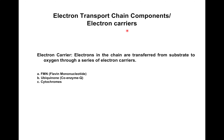The electron transport chain components, or electron carriers, are FMN, ubiquinone, and cytochrome. Electrons in the chain are transferred from substrate to oxygen through a series of electron carriers.